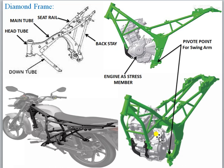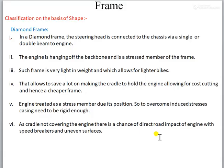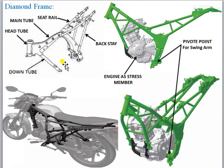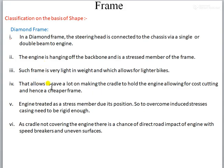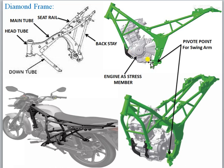So the engine needs to be tough enough to absorb or withstand the stresses coming from the road surface. Such a frame is very light in weight, which allows for a lighter construction. One member is missing compared to a full frame, so it is comparatively lighter. This allows cost savings in manufacturing because instead of that member, the engine is treated as one of the stress members. Because of that, the cost of one member is reduced and manufacturing time is also reduced.